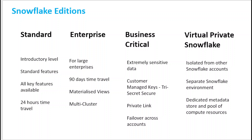Business Critical can also provide failover across accounts — you can create database replications across accounts, which is not available in Standard and Enterprise editions. Finally, there's Virtual Private Snowflake. I have not seen many customers using this, but it's mainly for isolation of your account. In fact, the cloud services layer is also isolated. The cloud services layer, which is the main brain of Snowflake, is normally shared across various accounts. But with VPS, you get a dedicated isolated layer — it's a separate Snowflake environment dedicated for you, similar to a dedicated host in AWS.